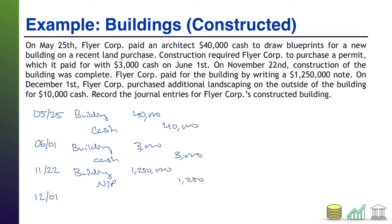Notice that it doesn't matter that everything didn't occur on the same date — what matters is putting the right historical cost into the building account. For December 1st, we credit Cash $10,000. If you thought we'd debit Building here — this was a trick. Landscaping does not count as a capitalizable expenditure for buildings. Landscaping is a type of land improvement, so it goes to the Land Improvement account, as it's a different type of fixed asset.